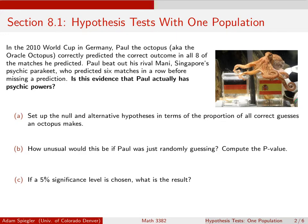So Paul was eight out of eight. But of course, Paul might not be making predictions here. He just might randomly be choosing one of the boxes. So let's see how we can set up a framework for a hypothesis test to determine whether, at least statistically speaking, Paul has any psychic powers.